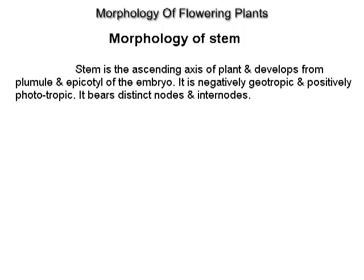Morphology of stem. Stem is the ascending axis of the plant and develops from the plumule and epicotyl of the embryo. It is negatively geotropic and positively phototropic. It bears distinct nodes and internodes.